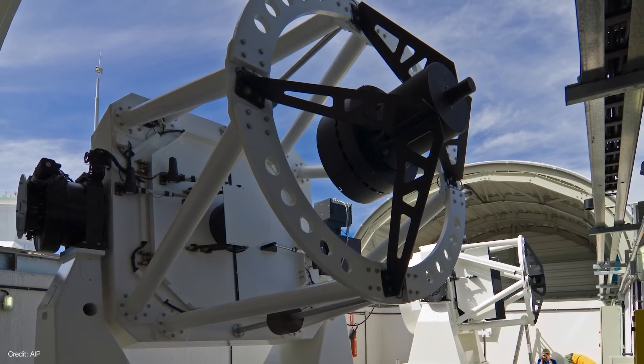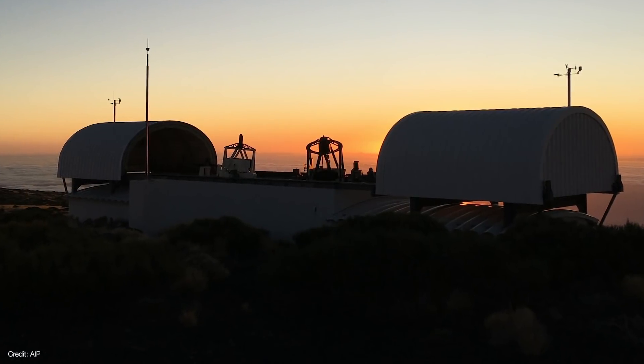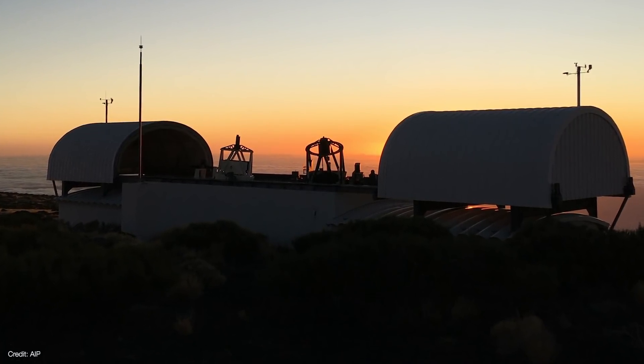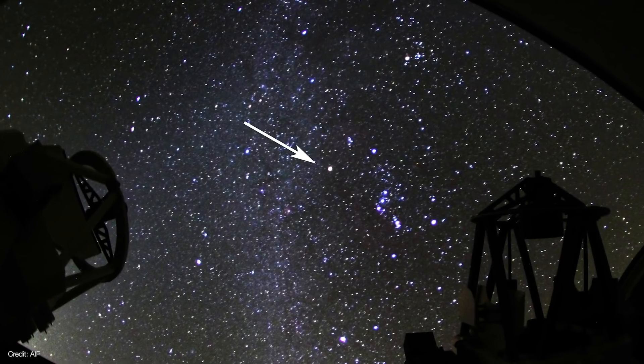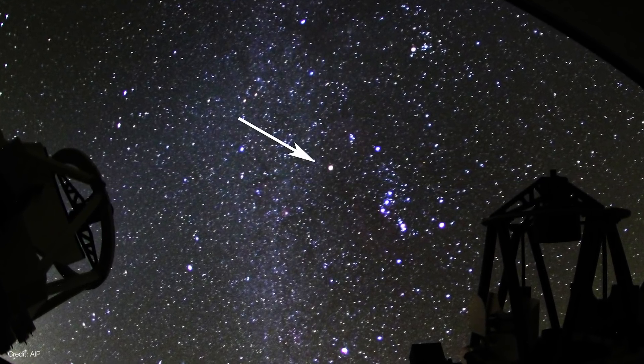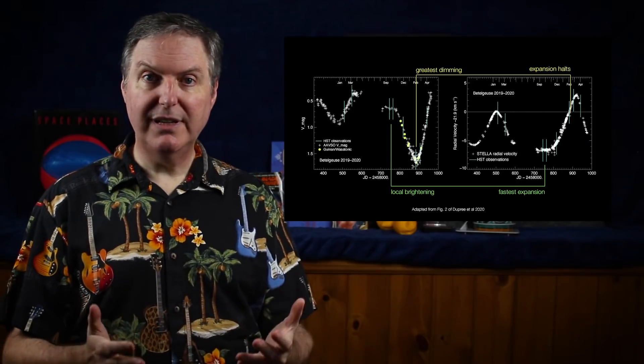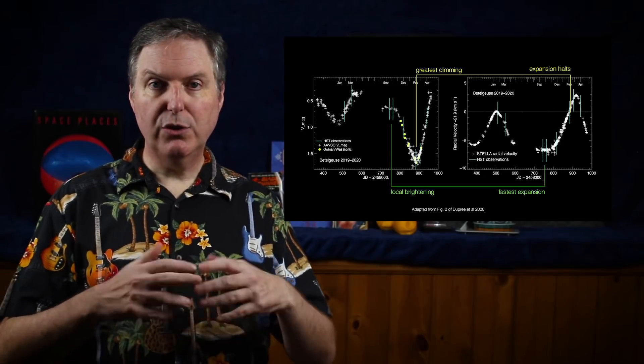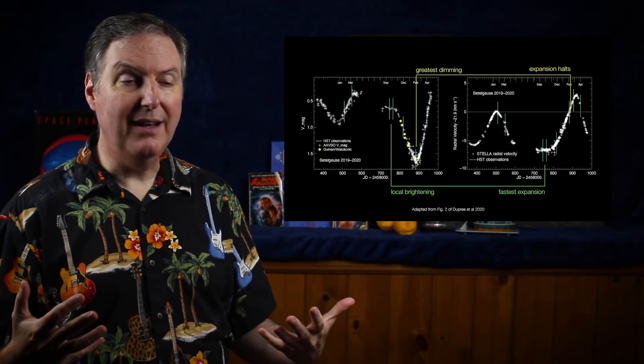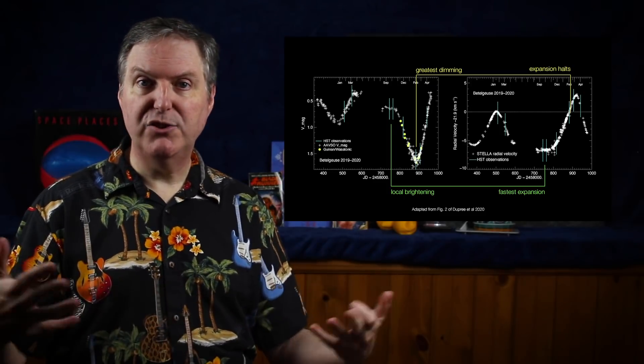While Hubble was making its observations, the 1.8-meter STELLA-2 telescope at the Azana Observatory in the Canary Islands measured the Doppler shift of Betelgeuse's spectrum. It showed that Betelgeuse was expanding outward at the time Hubble observed the brightening in the star's atmosphere and continued expanding as it was dimming. So it looks like the brightening in the southeast region occurred while the star was expanding, and it's even possible that this brightening may have caused that expansion to accelerate.